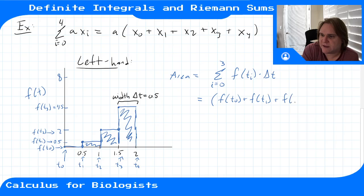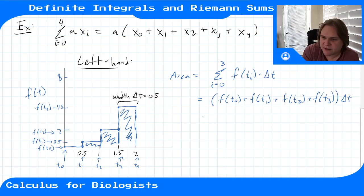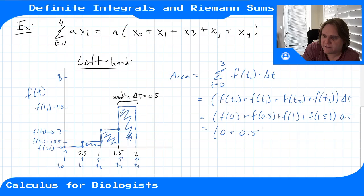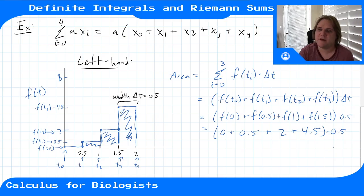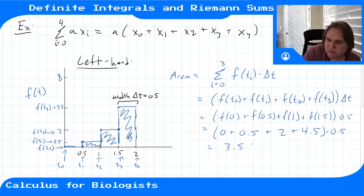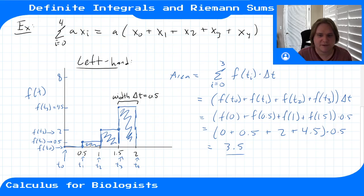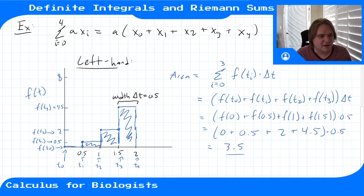Let's check what this formula gives us: f(t_0) + f(t_1) + f(t_2) + f(t_3), all times delta t. Plugging in numbers: f(0) + f(0.5) + f(1) + f(1.5), times 0.5, which equals 0 + 0.5 + 2 + 4.5, times 0.5, giving us 3.5 — the same number we got when computing each rectangle's area by hand.